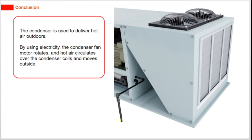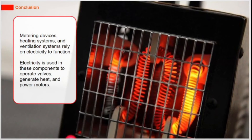By using electricity, the condenser fan motor rotates and hot air circulates over the condenser coils and moves outside. Metering devices, heating systems, and ventilation systems rely on electricity to function. Electricity is used in these components to operate valves, generate heat, and power motors.